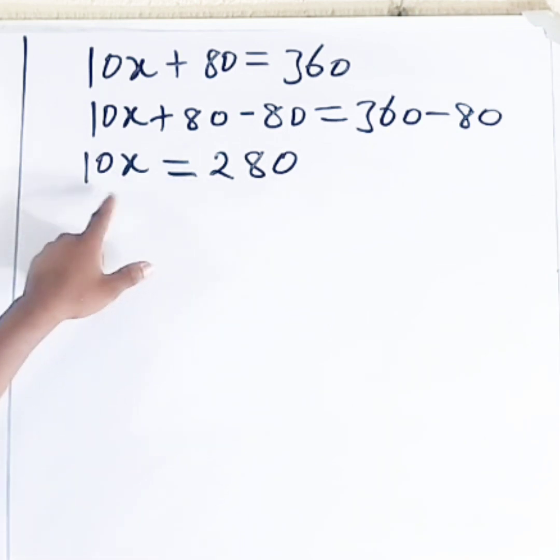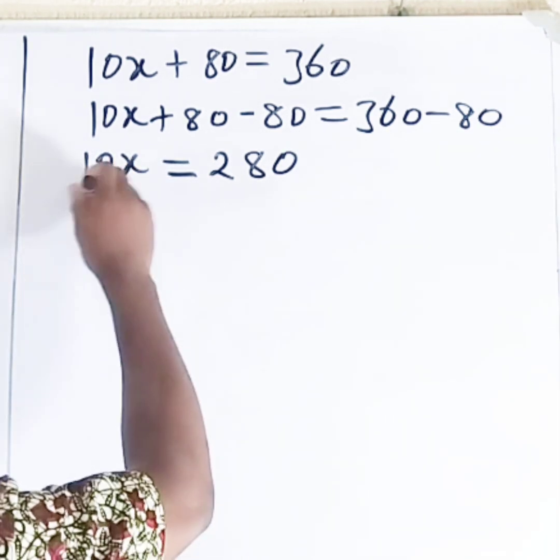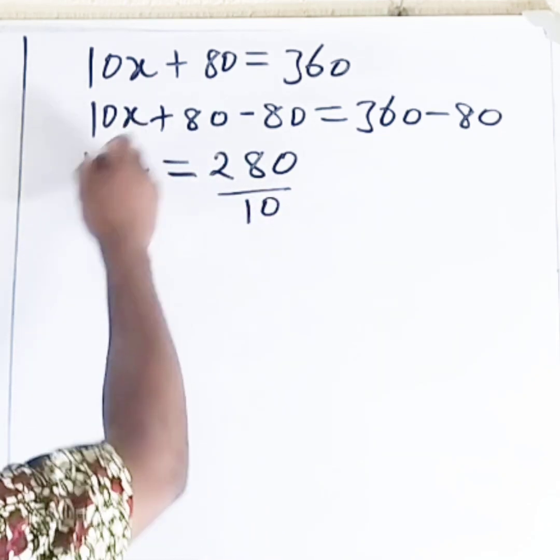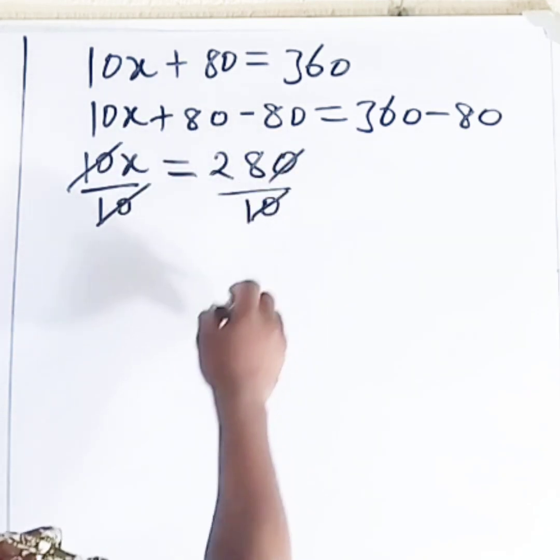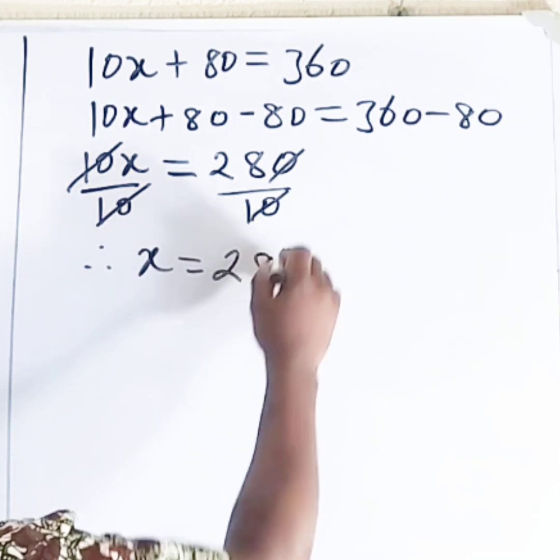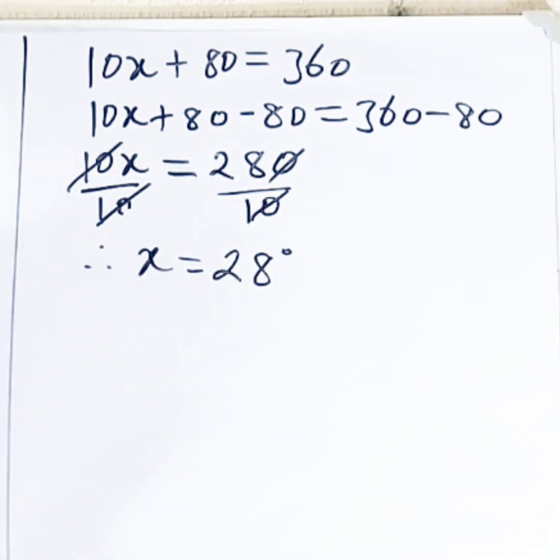We divide both sides by 10. So the value of x is actually 28 degrees.